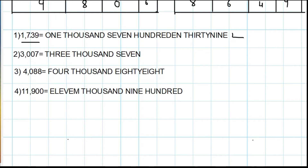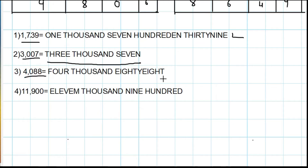Second question: 3007 — three thousand seven. Third question: 4088 — four thousand eighty-eight. Fourth question: 11900 — eleven thousand nine hundred.